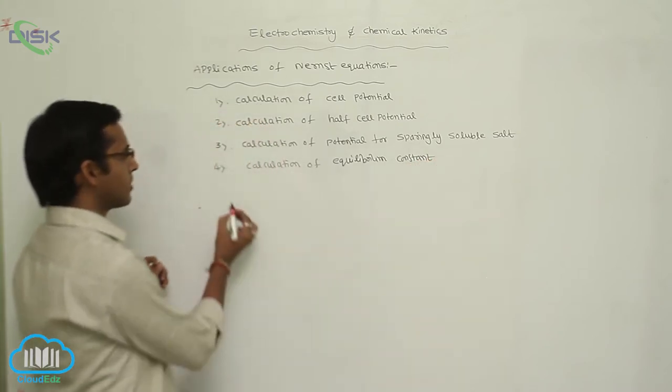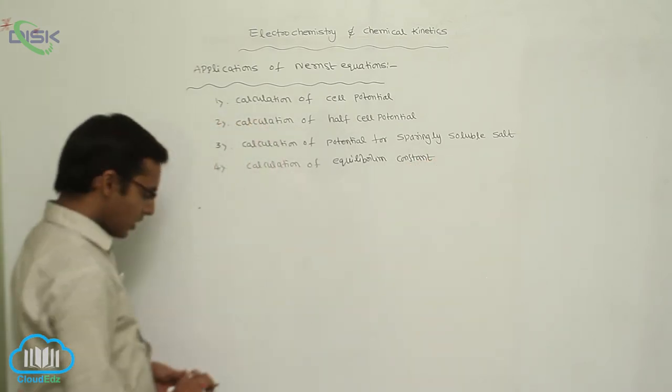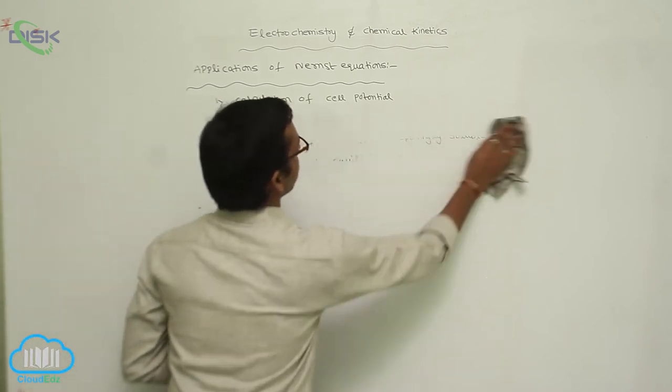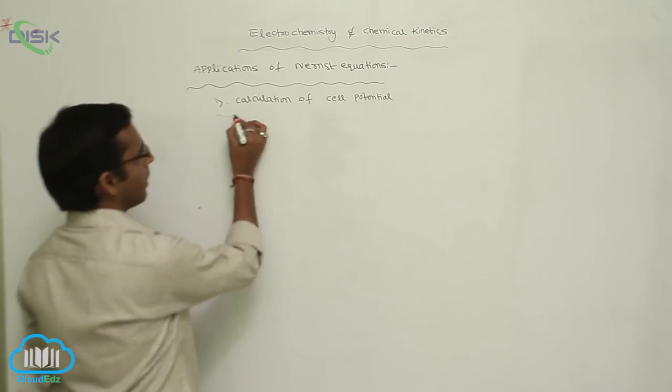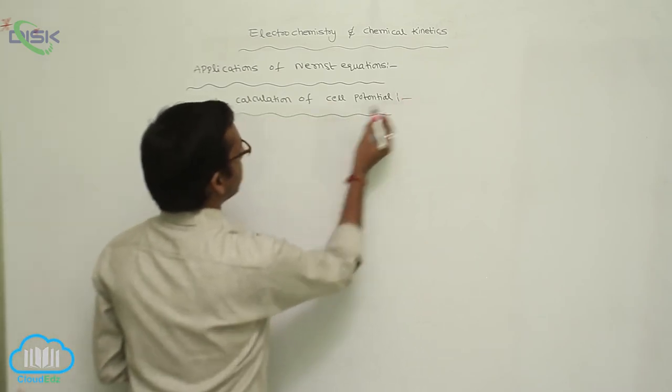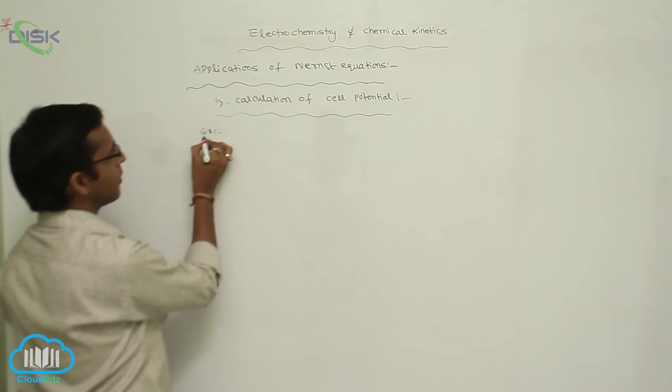In the first one, calculation of cell potential, we'll consider a simple example: the Daniel cell.